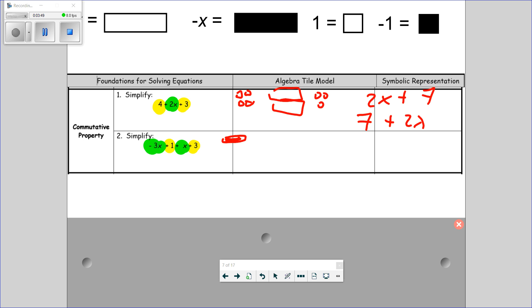Negative 3x plus 1 plus x plus 3. What happens when you put a negative x with the positive x? These become zero pair. Bye-bye. Anything else to simplify here? No. So, we have negative 2x plus 4. Is there another way I can write this symbolically? I have 4 positive plus negative 2x. Is there another way I can write this symbolically? 4 minus 2x. This is the most simplest way of writing it.